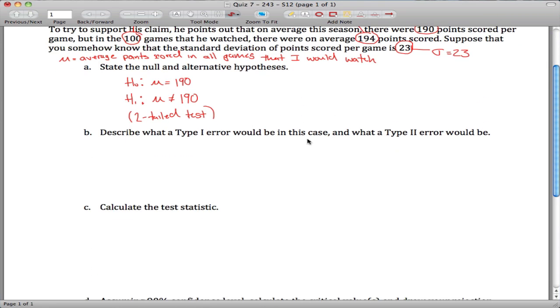Describe what a type 1 error would be in this case and what a type 2 error would be. Type 1 is falsely rejecting the null hypothesis. So that is concluding that watching does affect points scored when, in fact, it does not.